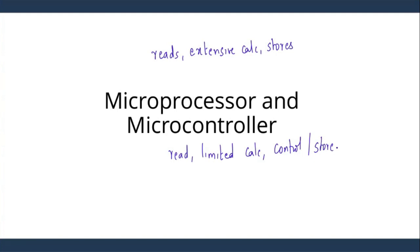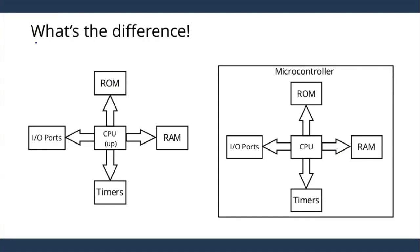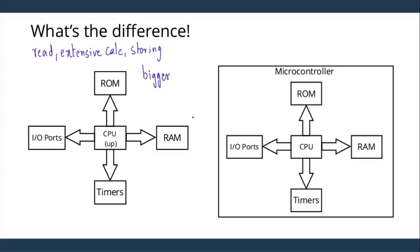We will see in much more detail what the differences are. Talking about a microprocessor — in the previous slide I talked about reading, doing extensive processing or extensive calculation, as well as storing of data. When talking about reading data, the data will be massive or bigger; the size of the data will be bigger. In the case of a microprocessor, the ROM and RAM requirements are comparatively bigger to store or to handle this kind of data.